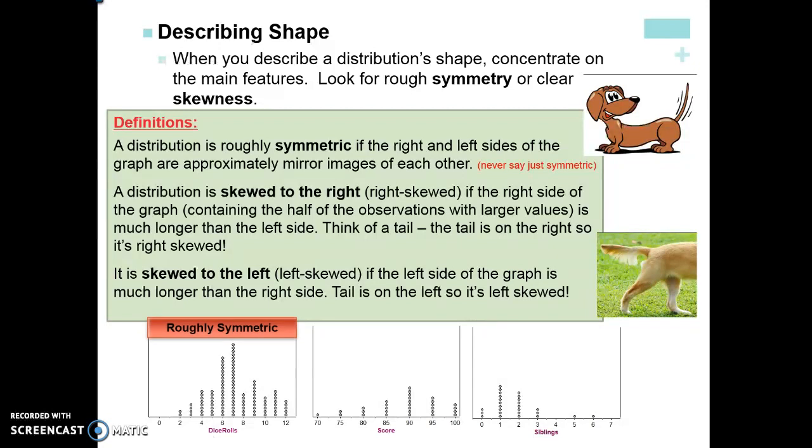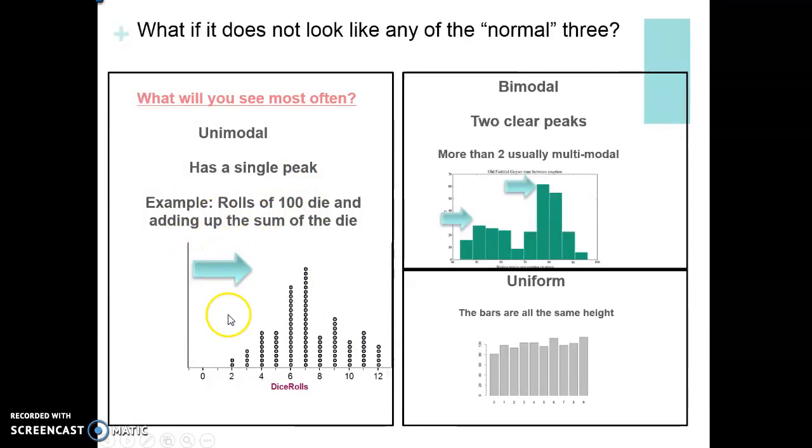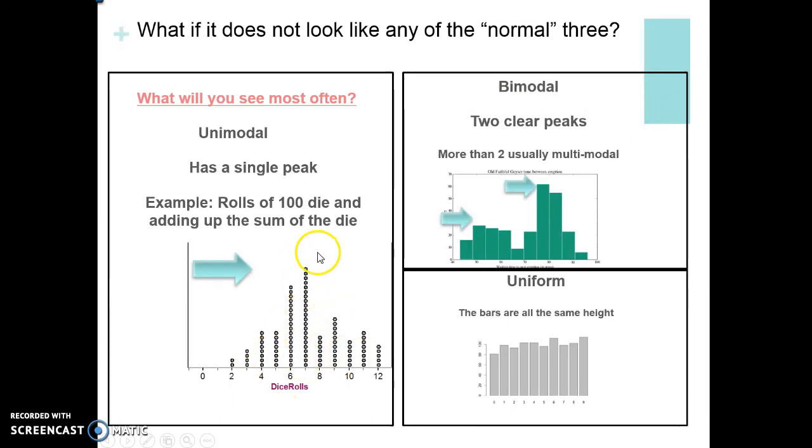Let's take a look at what if it doesn't look like any of those normal three - not roughly symmetric, skewed right, or skewed left. If something is unimodal, that means it has a single peak. This is what you'll see most of the time, a nice symmetric unimodal graph. Think about if you were to roll a hundred die and you added up the sums of the die - the sum is two, the sum is three, the sum is four. Most of the sums are going to be between five and eight. If I folded that down in the middle that would be symmetric on both sides - unimodal, one peak.